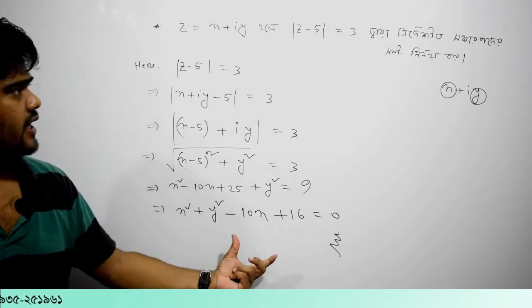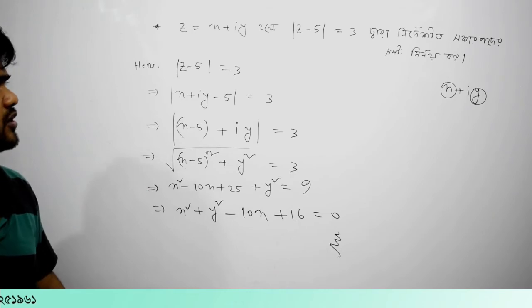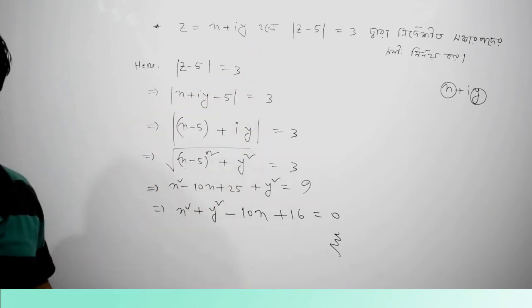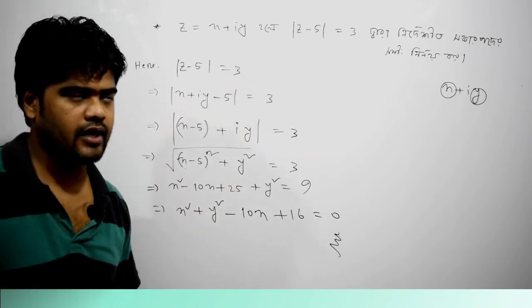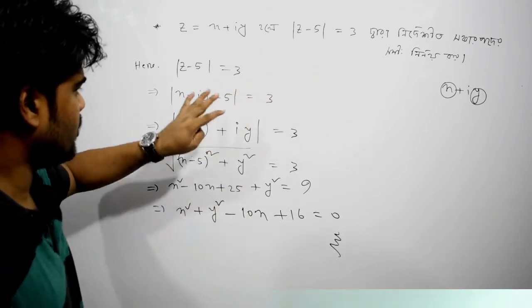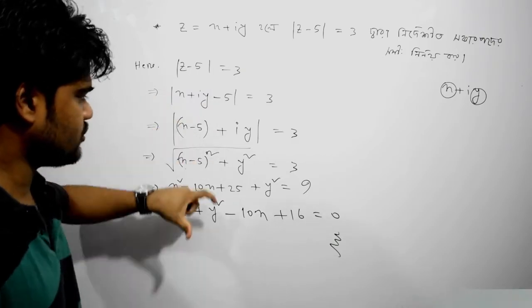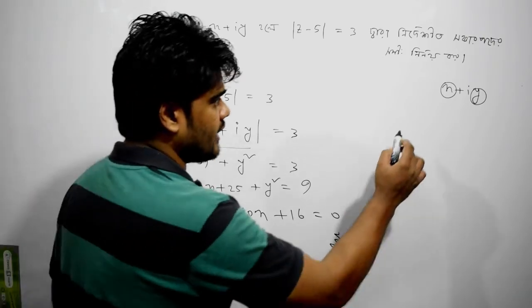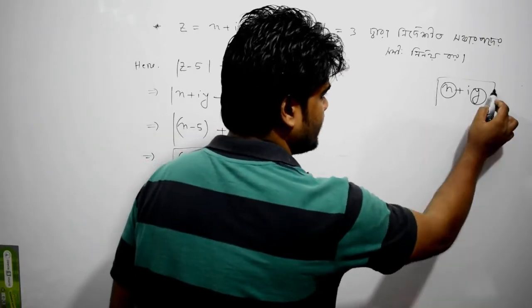So we have 1² minus 2² minus 1² minus 4, which is equal to x² minus 1² minus 1².